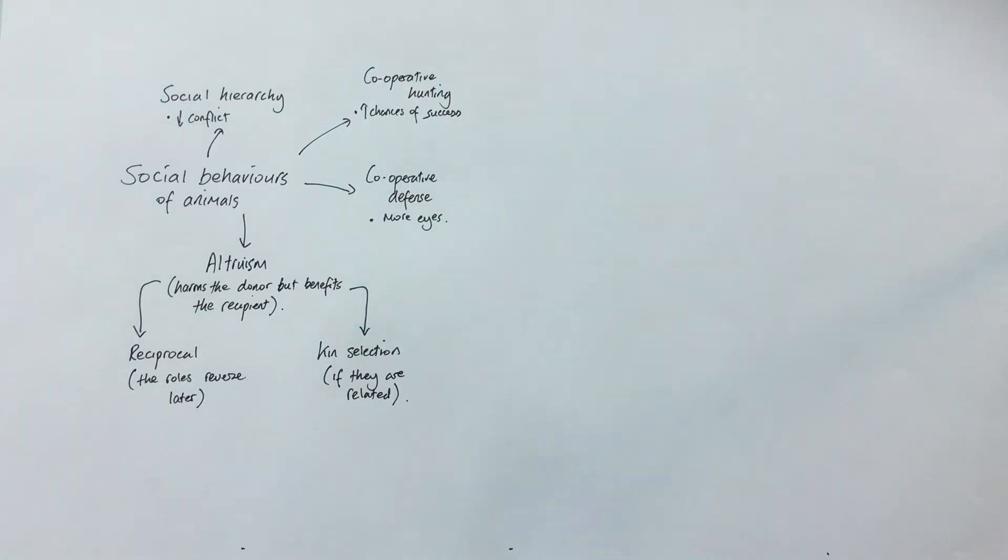Reciprocal altruism. A good example of that in the textbooks is the vampire bat. They go hunting at night, and if there are any bats that don't catch prey, then other bats will share some of their prey with them. The idea being that later on they will return the favour, so it's reciprocal in the hope that all the bats will benefit at some point.